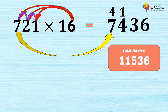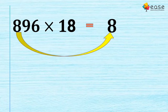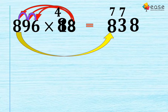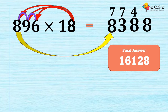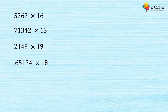This next example will have all carryovers. Write the 8 as it is. Then 8 × 8 = 64, 64 + 9 = 73. Then 8 × 9 = 72, 72 + 6 = 78. Then 8 × 6 = 48. Adding all carryovers: 8 + 7 = 15, 7 + 3 = 10, 8 + 4 = 12, giving 8. The final answer is 16128.